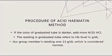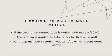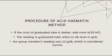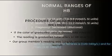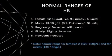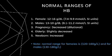I'm Sara Fahmida and I'll continue the procedure of the acid hematin method. If the color of the graduated tube is darker, add more N/10 HCl. The reading in the graduated tube refers to the hemoglobin level in g/dL. Our group member Zubia Jabbar had a reading of 13 g/dL, which is considered normal. Normal hemoglobin indices: in females it is 12–16 g/dL or 7.4–9.9 mmol/L; in males it is 13–18 g/dL or 8.1–11.2 mmol/L.